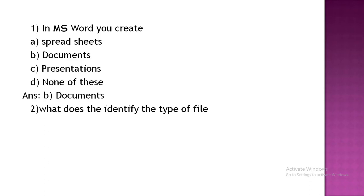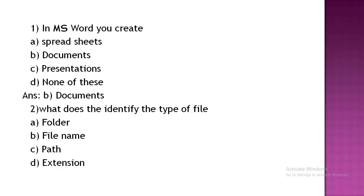What identifies the type of file? Option A: folder. Option B: file. Option C: path. Option D: extension. The correct answer is Option D, extension.